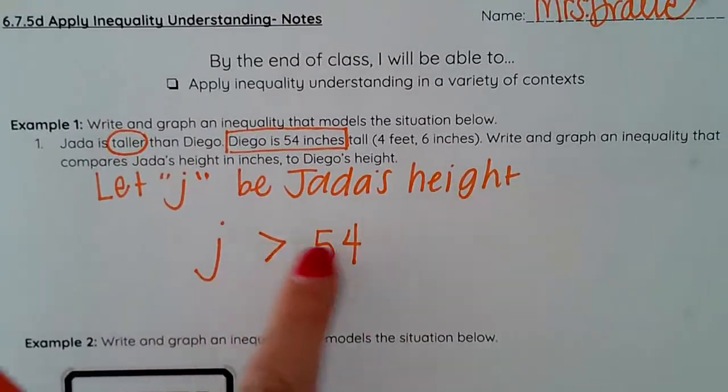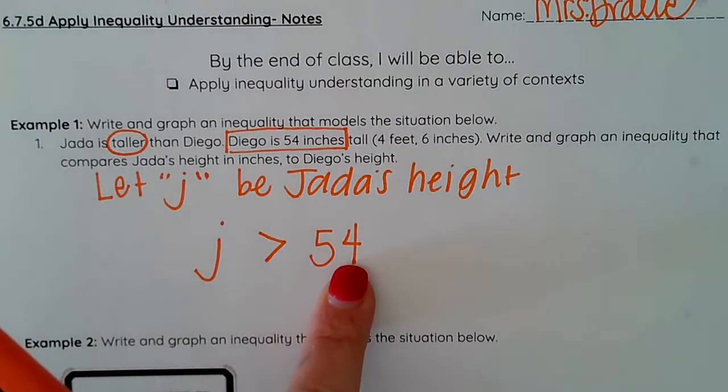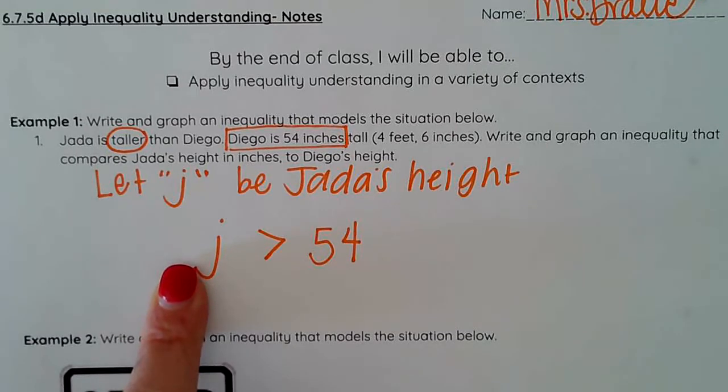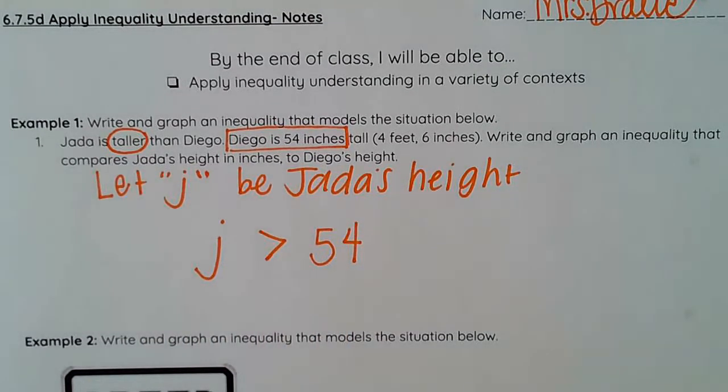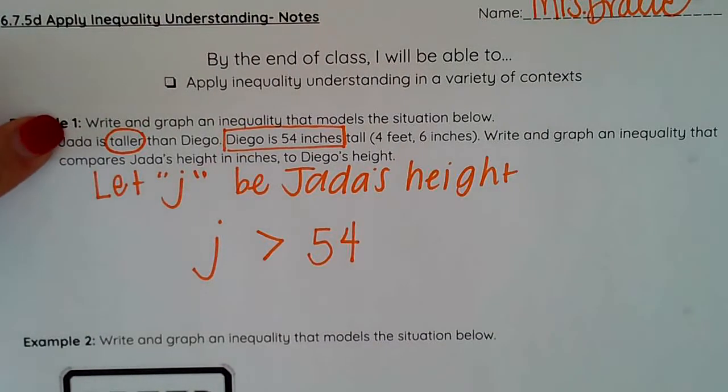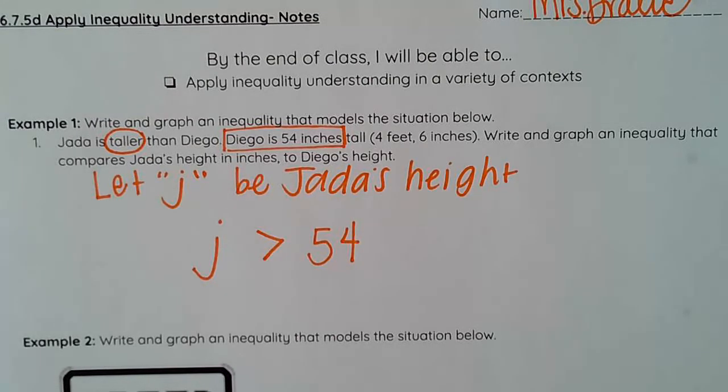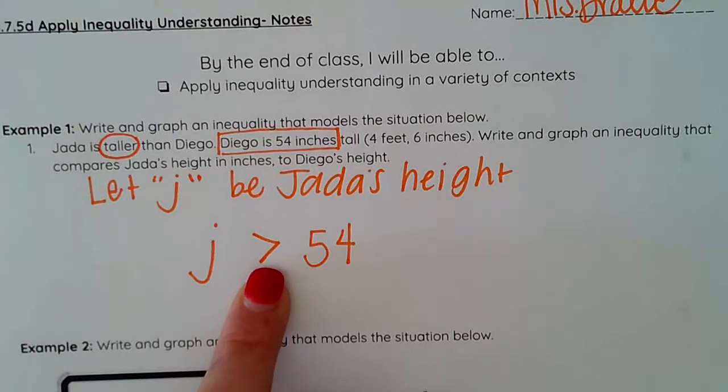So then we go ahead and write our greater than symbol. Jada is greater than 54, Diego's height. Jada is taller than 54 inches. Now I have to determine if I need to put that or equal to. Well here it says that Jada is taller. So she can't be 54 inches. She has to be more than that. So we leave that greater than symbol.